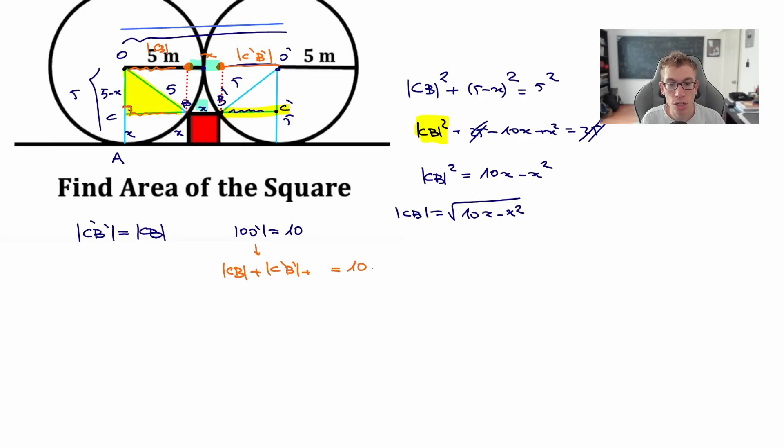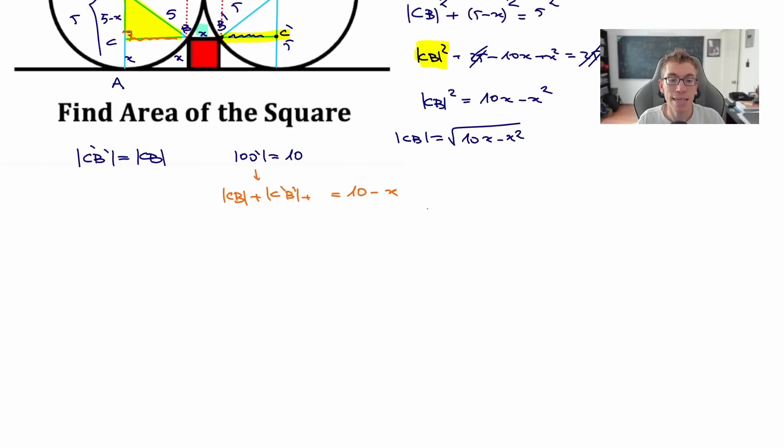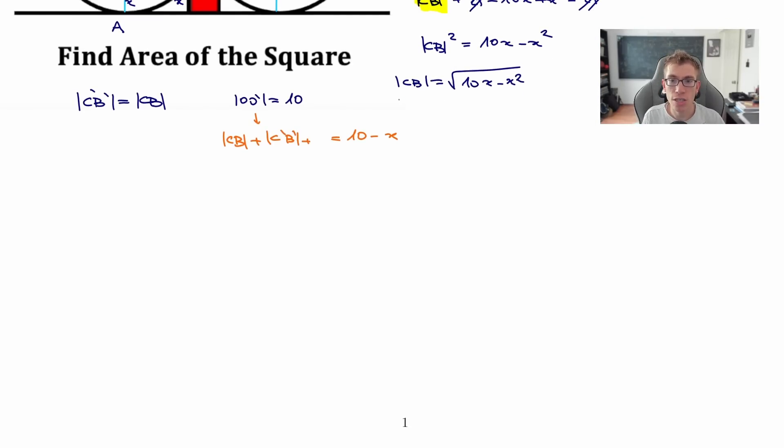Nihayetinde az önce 10 dediğimiz OO üstü uzunluğu aslında neye eşit geldi? CB artı C üstü B üstü artı x'e eşit geldi. Bunların hepsi 10'a eşitmiş. Hadi burayı çözelim. Şu x'i yana aldım: 10 eksi x. CB ve C üstü B üstü birbirlerine eşitlerdi, yanda var, iki katını alıyorum: 2 tane kök 10x eksi x kare eşittir 10 eksi x.